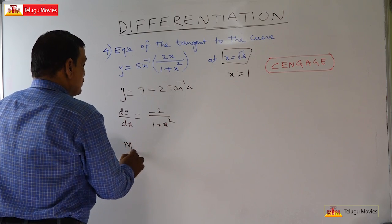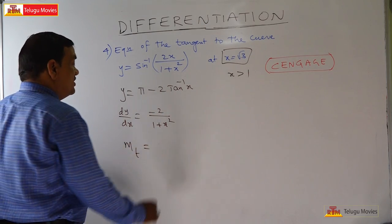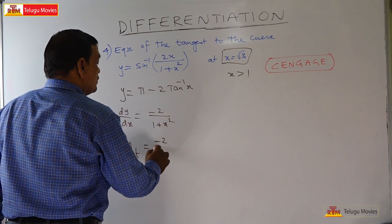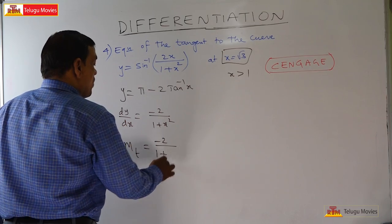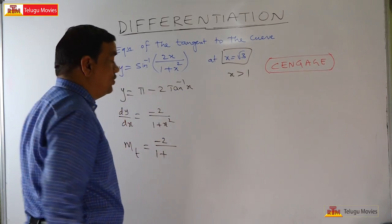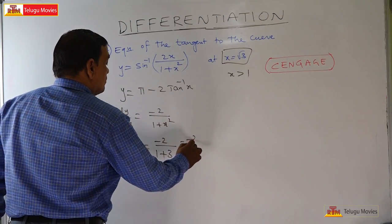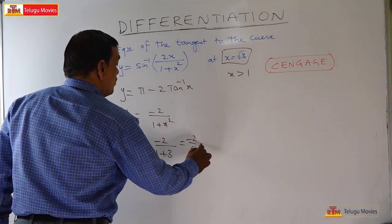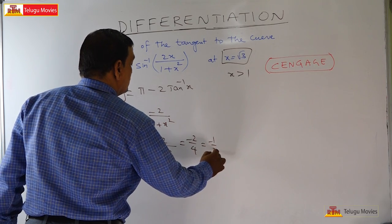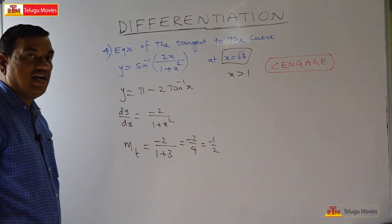Differentiating y = π - 2tan⁻¹(x), we get dy/dx = -2/(1+x²). Substituting x = √3: slope = -2/(1+3) = -2/4 = -1/2. So the slope of the tangent is -1/2.